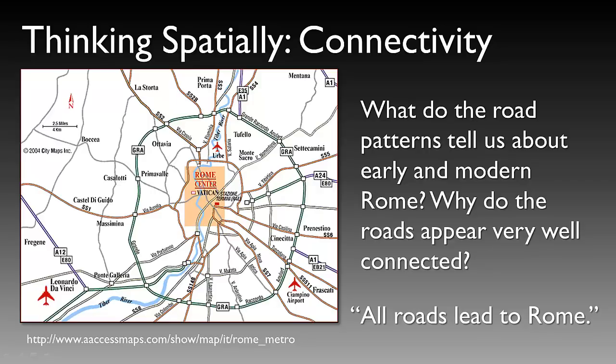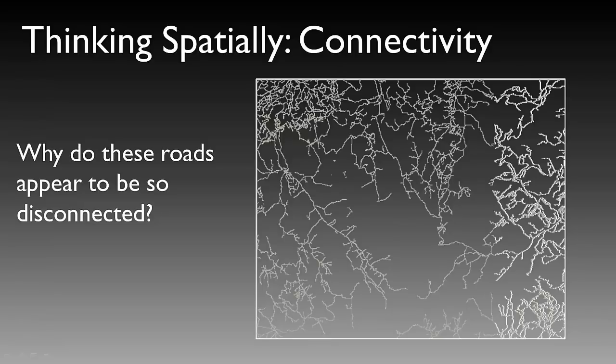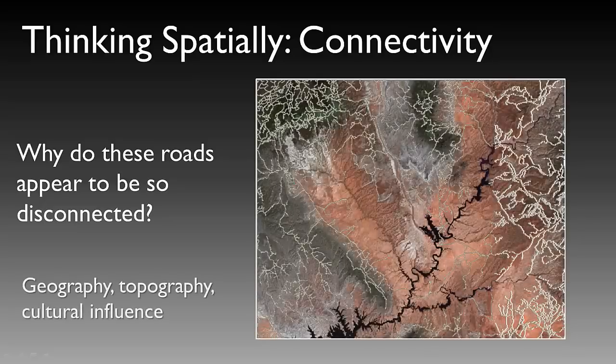Here's another example. Without knowing any spatial context, why do these roads appear so disconnected as opposed to the previous slide that appeared so connected? If we provide a little more spatial information, you can see that those roads are geographically, topographically, and culturally influenced. This is a shot of the southern Utah region, where there are many two-track and small roads, but they're very disconnected because of the topography and geography of the region.